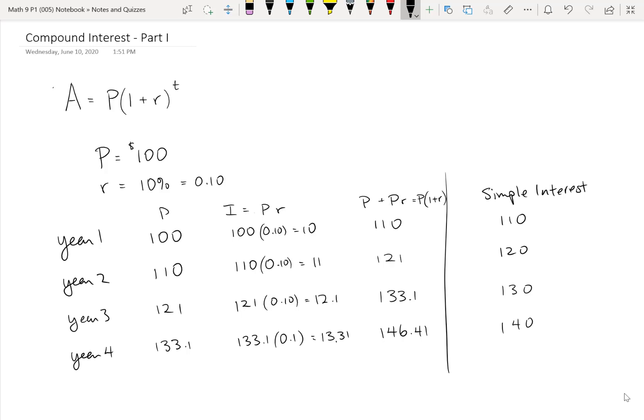Now, what happens each year is we simply multiply by 1 plus the rate. And so we can use the laws of exponents to write the second row as the principal times 1 plus the rate. When we multiply by 1 plus the rate again, that's just an exponent of 2. The third year would be the principal times 1 plus the rate to the power of 3. The fourth year would be the principal times 1 plus the rate to the power of 4. And so you can see that that exponent T just represents the number of years.